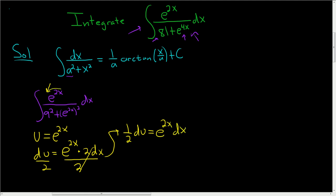So now we can rewrite this, e to the 2x dx, that's right here, and that's equal to 1 half du. So we can pull the 1 half out, and then we have du. In the denominator, we still have the 9 squared, plus, and then e to the 2x is simply u, so this is u squared. So now we'll carefully use the formula.